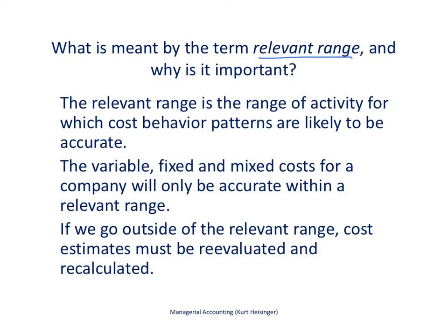The term 'relevant range' is important when estimating costs. The relevant range is the range of activity for which our cost behavior patterns are likely to be accurate, for both fixed and variable costs. For example, at Bikes Unlimited, production capacity may be up to 6,000 units. Beyond that, we'd need a new factory or additional employees, moving outside the relevant range where our cost estimates are valid.